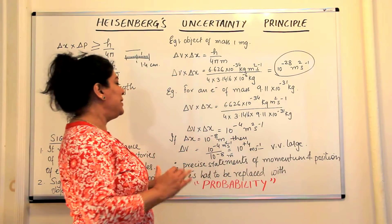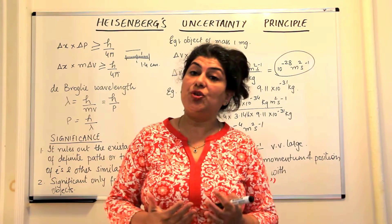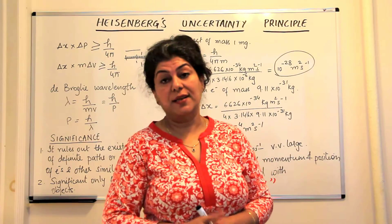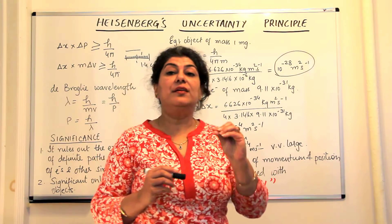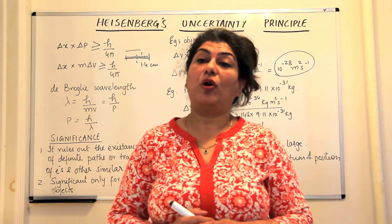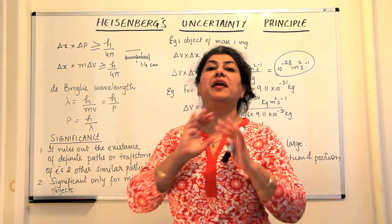What was the result of these two new discoveries—that matter has dual nature and the Heisenberg uncertainty principle? Both of these shed light on the drawbacks of Bohr's model, showing that certain paths or definite trajectories are impossible.